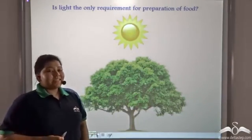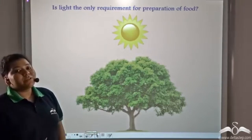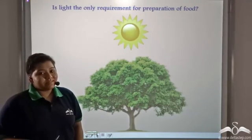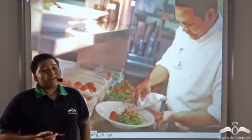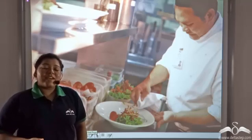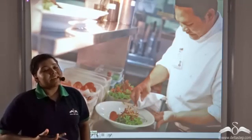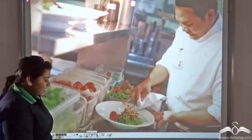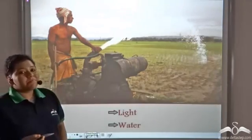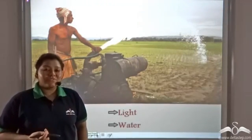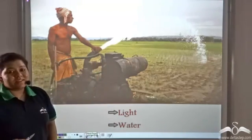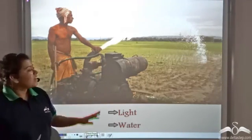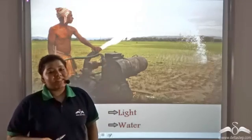Now is light the only requirement for preparation of food? No. What are the other requirements? Well, to make food, vegetables and spices are required. Similarly, for plants to manufacture food, along with light, water is required, and that is the reason farmers irrigate their fields.